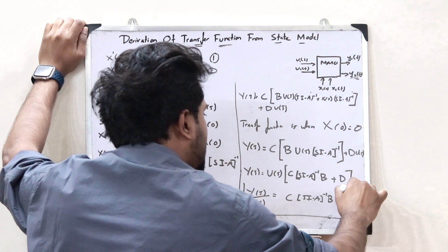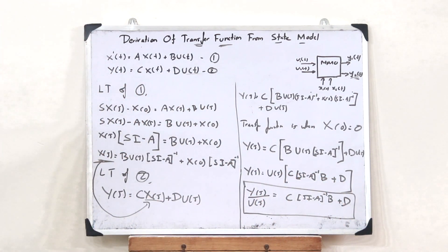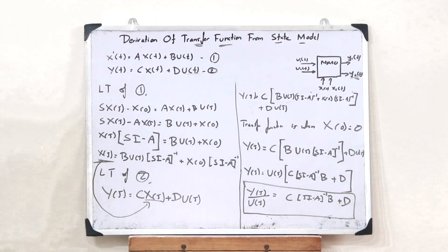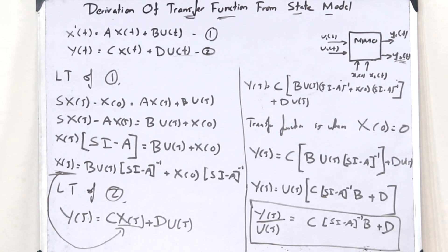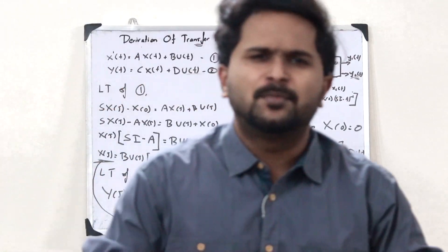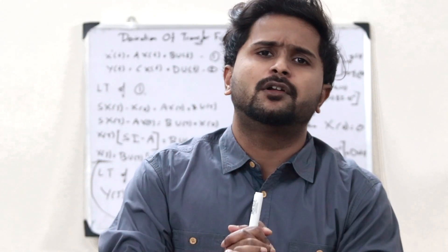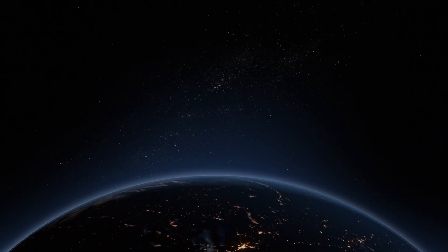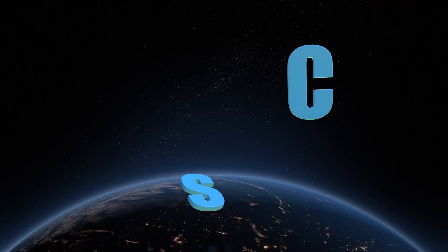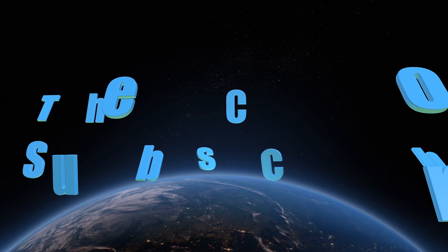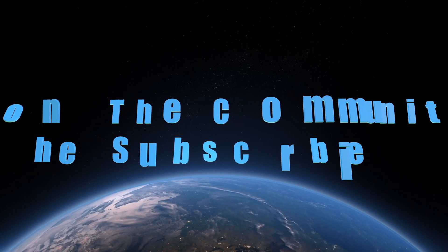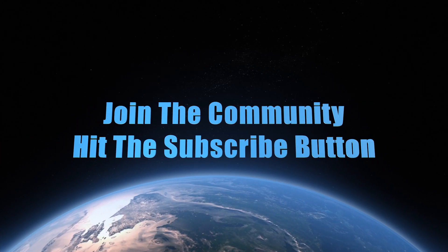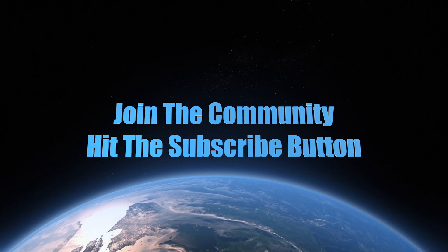This is simply the transfer function of a state model — as simple as that. I hope you guys now have a clear understanding of how you can derive the transfer function from the state model of a particular control system. If you found this video informative, please hit the like button and join this community by hitting the subscribe button. We'll be discussing further topics in upcoming videos, so stay tuned, stay subscribed. Until next time, I'll see you in the next video. Thank you.